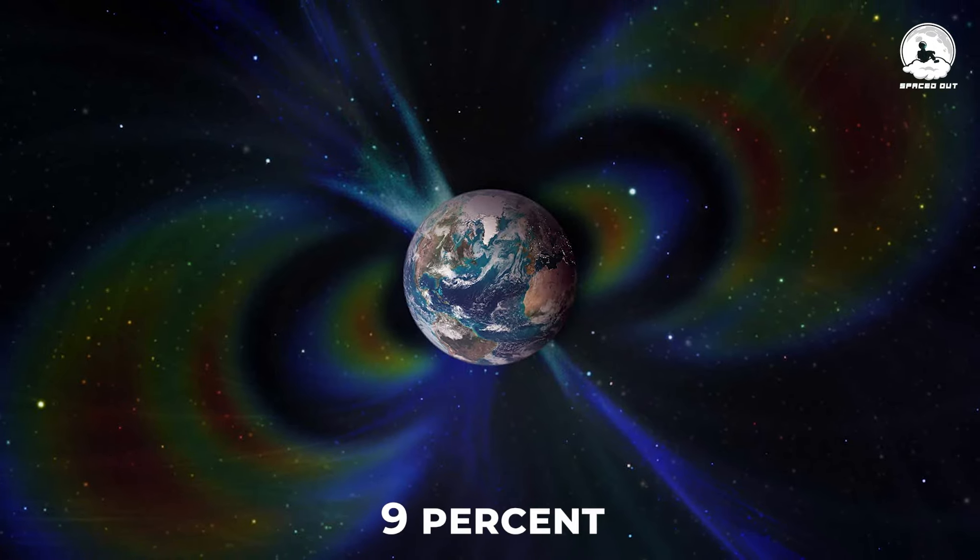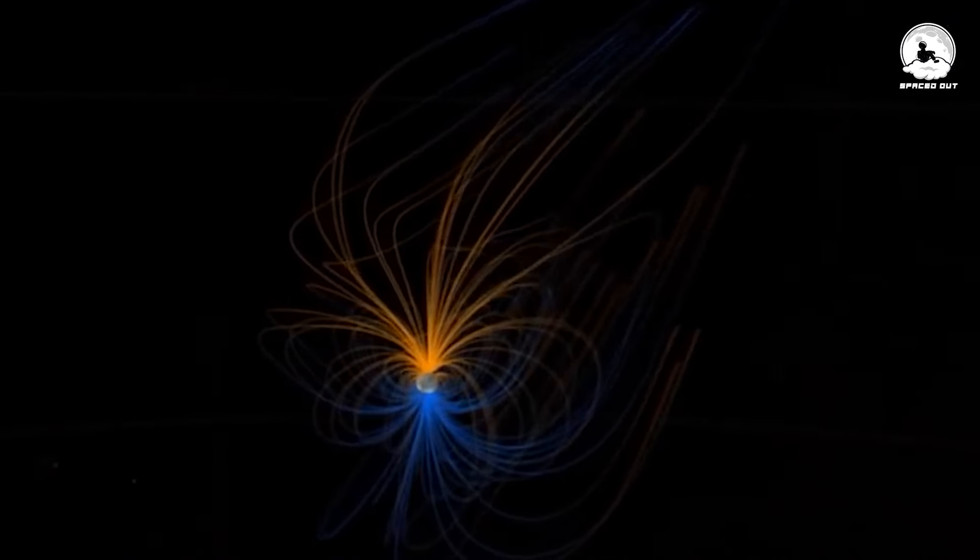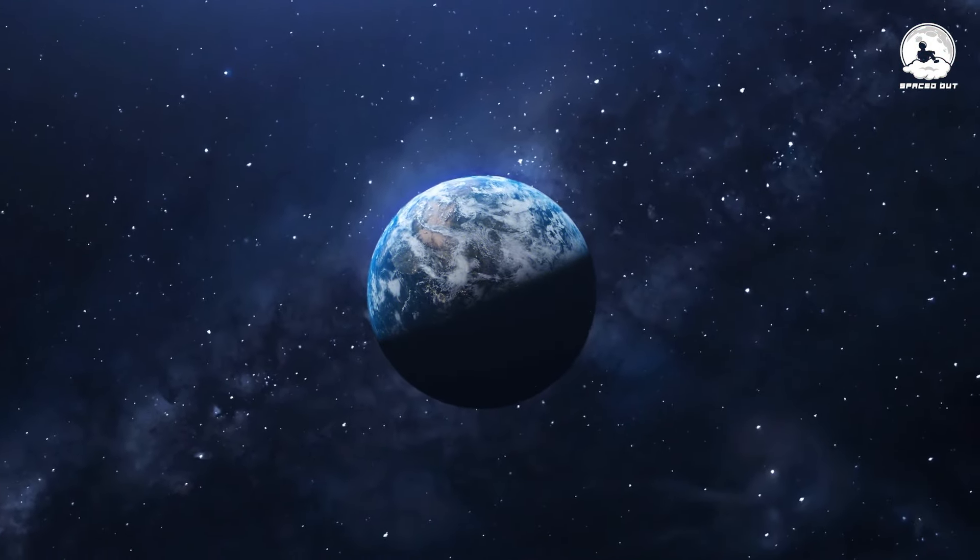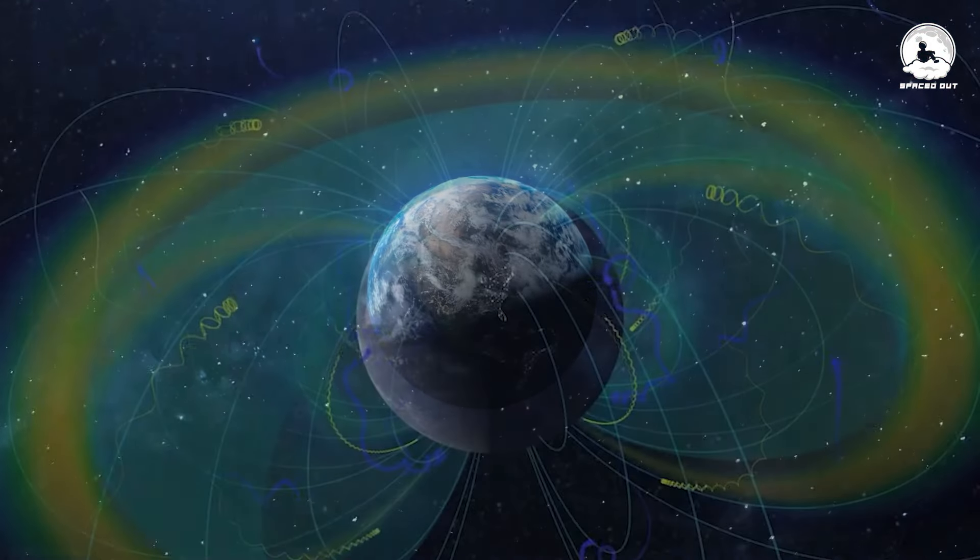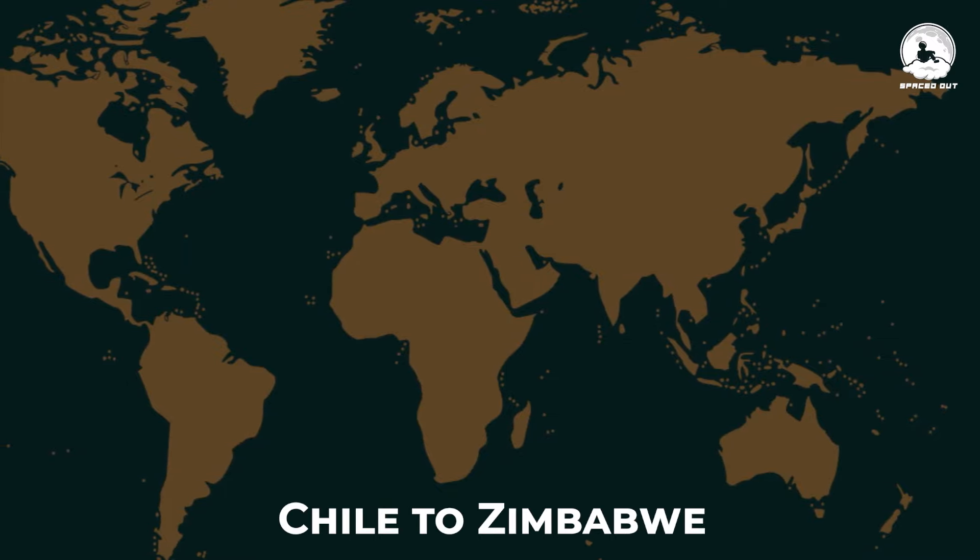dropping by approximately 9%. Although this might seem gradual in human terms, it represents a rapid change in the broader timeline of the planet. The weakening is not uniform globally, but is most pronounced in a specific region known as the South Atlantic Anomaly, stretching from Chile to Zimbabwe.